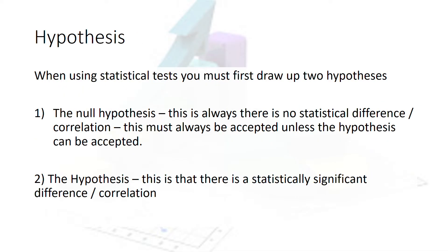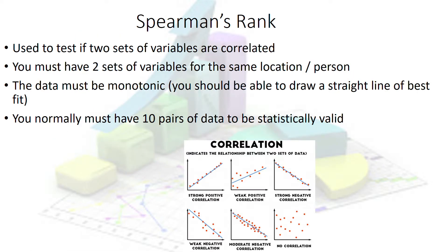The second thing to cover is the idea of a hypothesis. With any statistical test you first draw up two hypotheses. The first is always a null hypothesis: there is no statistical difference or correlation. You accept this unless you can prove there is a statistically significant difference or correlation. You can't have a situation where both hypotheses are true at the same time.